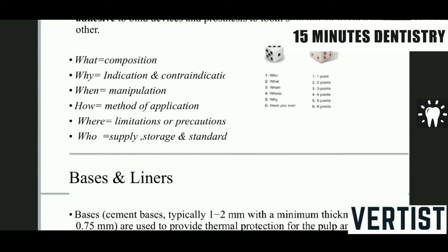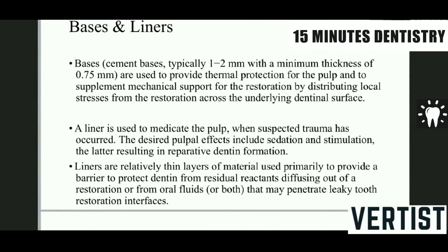Coming to bases and liners: bases are typically 1 to 2 mm, with a minimum thickness of 0.75 mm, and are used to provide thermal protection for the pulp. A liner is a thin insulating layer given to prevent the passage of ingredients from the cement to the pulp, and from external surfaces via marginal leakage to the pulp. It acts as a chemical barrier, given in multiple thin coats, whereas a base is given in one layer. That is the basic difference between bases and liners.